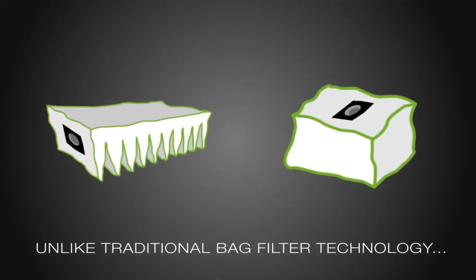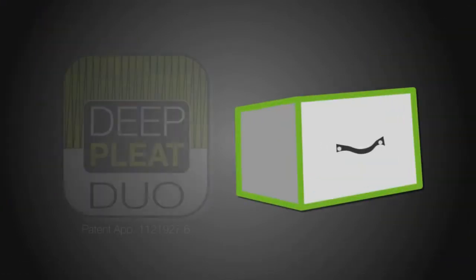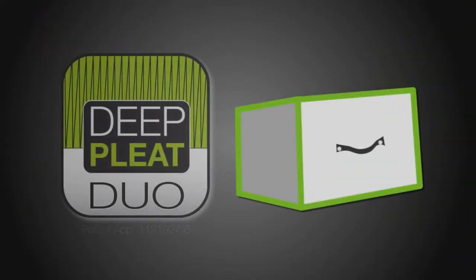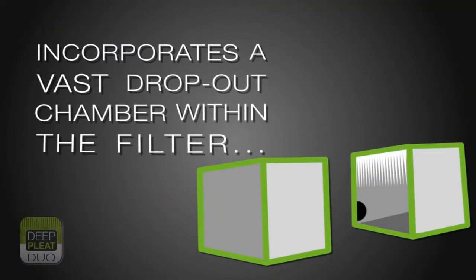Unlike traditional bag filter technology, the patent pending BOFA deep pleat pre-filter incorporates a vast dropout chamber within the filter having a volume area of 15 litres.